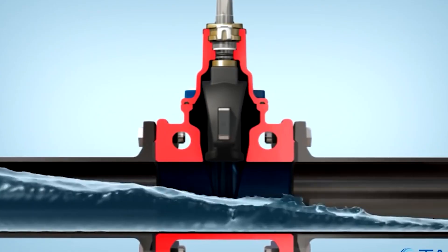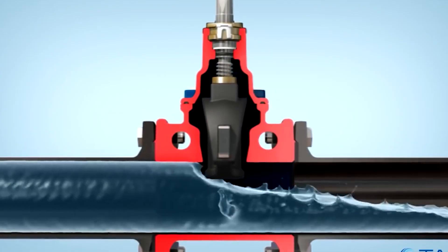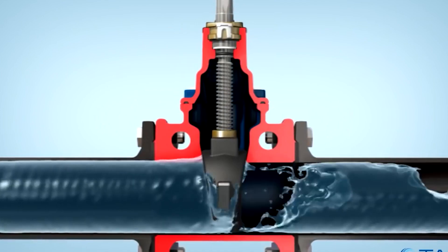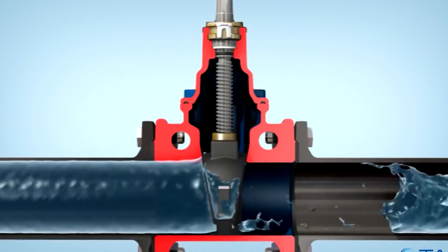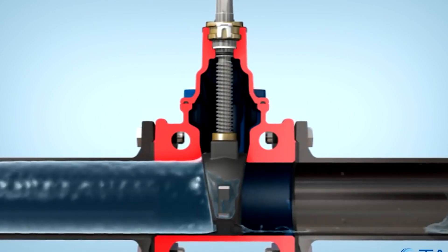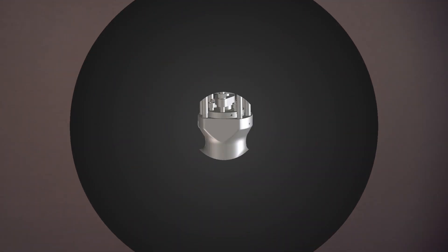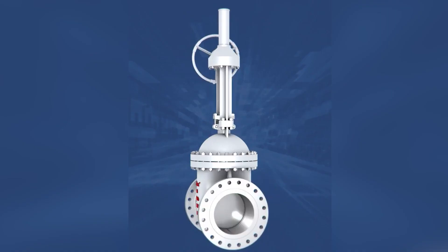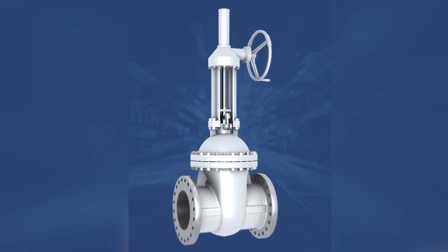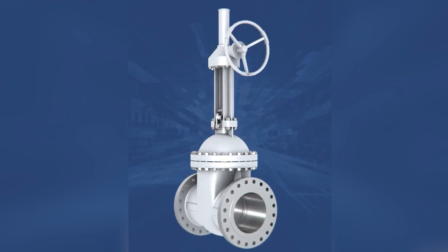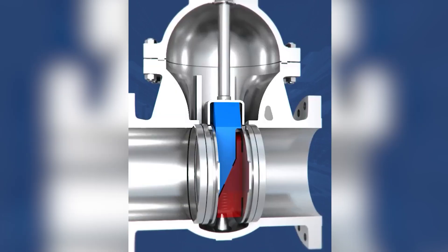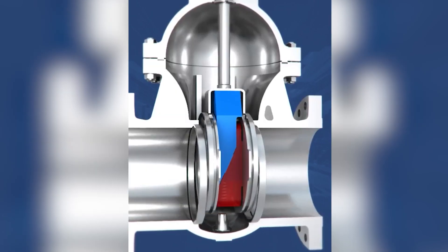Fourth one: gate valve. It is used for starting or stopping flow, for a straight line flow of fluid. Minimum flow restriction can also be achieved with a gate valve.